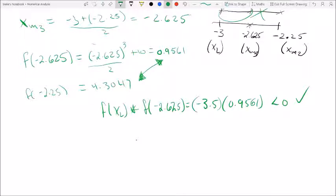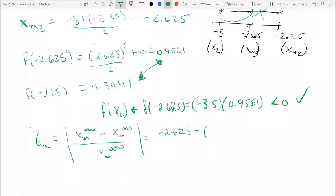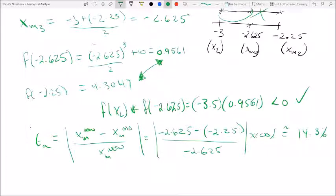So now we're getting pretty close here to our correct interval. So now we can just perform the error check and find out how big our approximated error could be. And we know that the error equals xm2... So in this case our xm2 was -2.625 and the old was -2.25. Take the absolute times by 100%, and that will give us roughly 14.3%. So that's not really that good. You want to get it probably below 5%, so let's just do one more iteration.